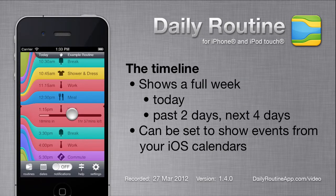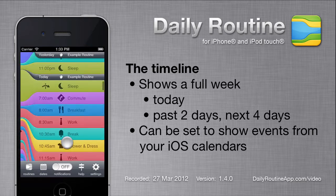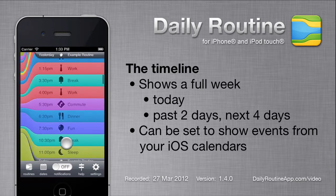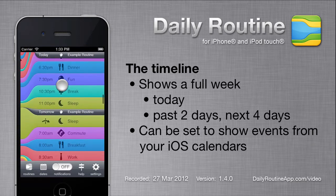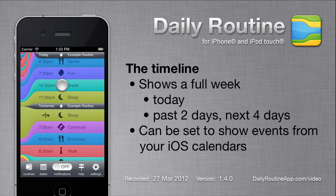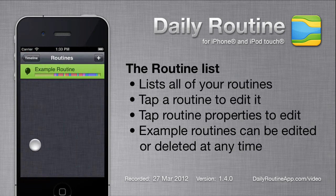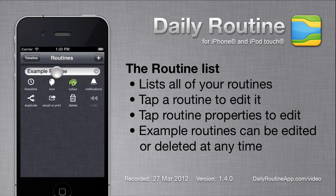The heart of the Daily Routine app is this screen. It shows today's time slots plus 2 days in the past and 4 days in the future, making a week altogether. This is the list of our routines. Here we see the optional example routine. We could delete it or add a second routine, but for now we'll edit this routine by tapping it.